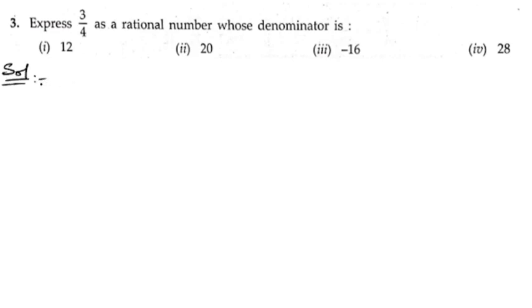Here we need to make the denominator, not the numerator. Earlier we changed the numerator, but in this problem we are going to change the denominator. Denominator means the number which is down. So let us take 3/4.